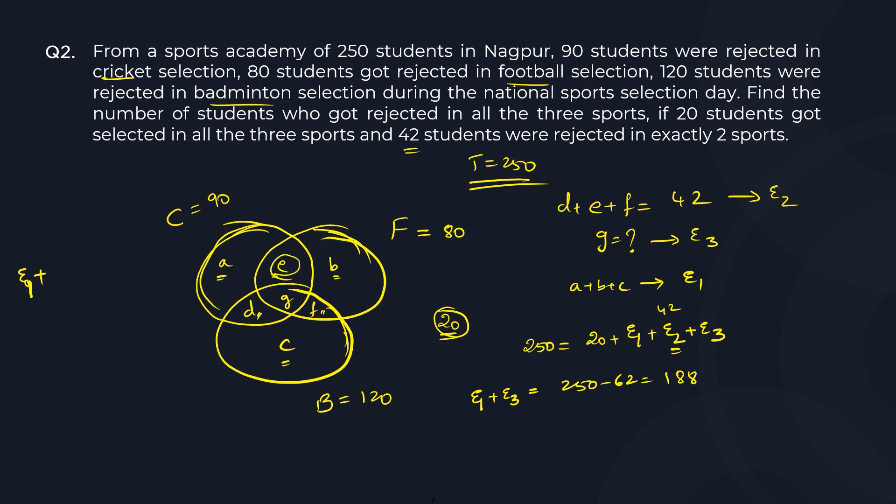Now E, D, and F will come twice each. Why? Because E is there both in C and F, that is cricket and football. Similarly, F is there in both badminton and football. So your exactly two will come twice. And your G will come three times. Why? Because G is there in every circle.